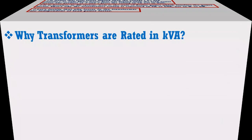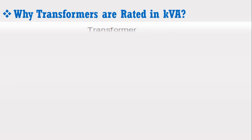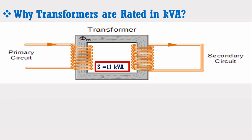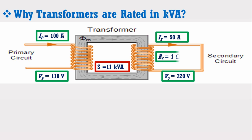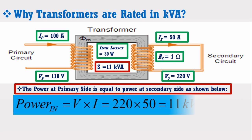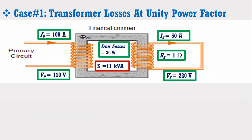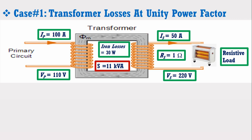Let's justify why losses in transformers are independent of the load power factor. Consider a single-phase transformer having a rating of 11 kVA. It has a primary voltage and current of 110 volts and 100 amperes respectively. The transformer has a secondary voltage and current of 220 volts and 50 amperes respectively. Suppose the transformer secondary has a total resistance of 1 ohm and iron or core losses of 30 watts. Now consider Case 1: unity power factor. Suppose the transformer is supplying power to a resistive load at unity power factor, and we have to calculate its output power and losses.